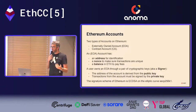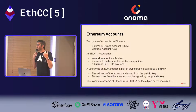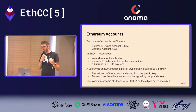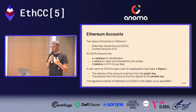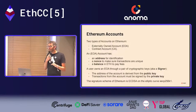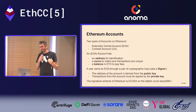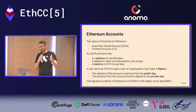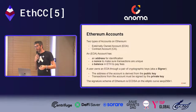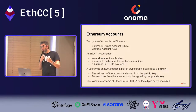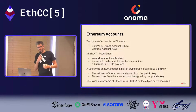As you probably know, there are two types of accounts on Ethereum: externally owned accounts (EOAs) that users own, and contract accounts that contain bytecode. An EOA has an address, a nonce, and a balance. A user owns an EOA through a pair of cryptographic keys — a signer — where the address is derived from the public key, and only the private key can authorize transactions.